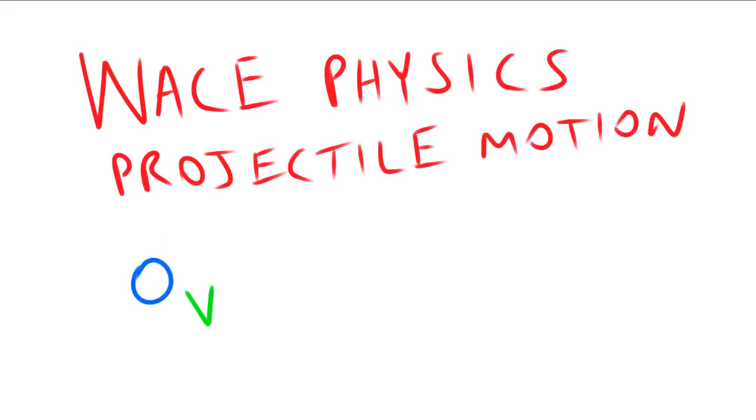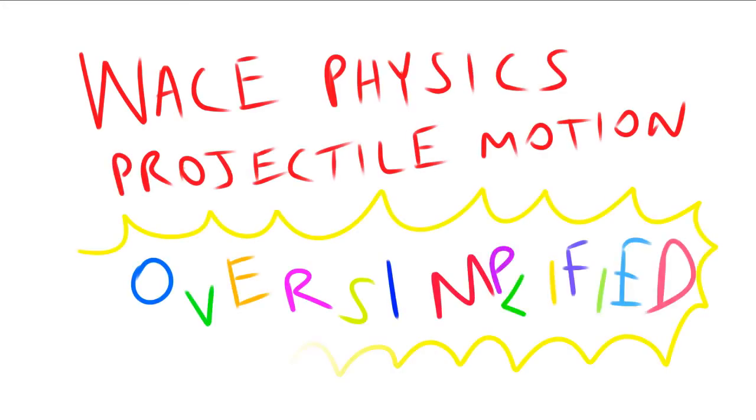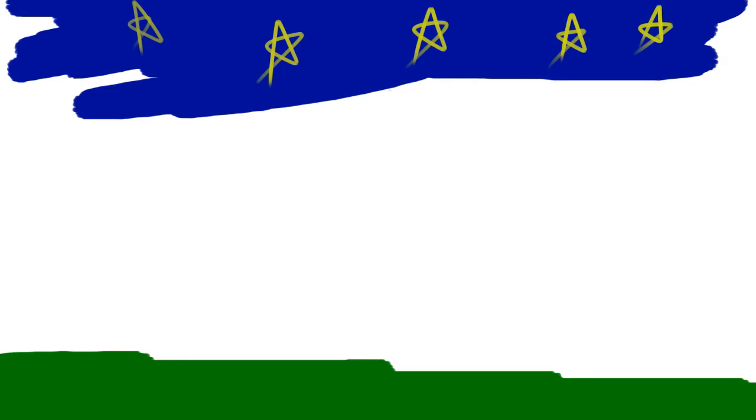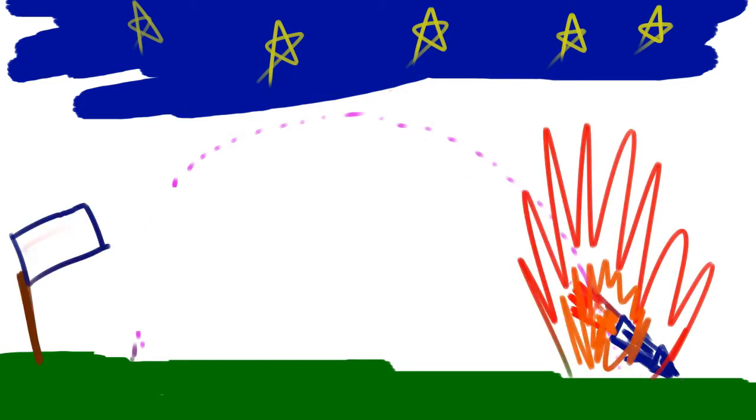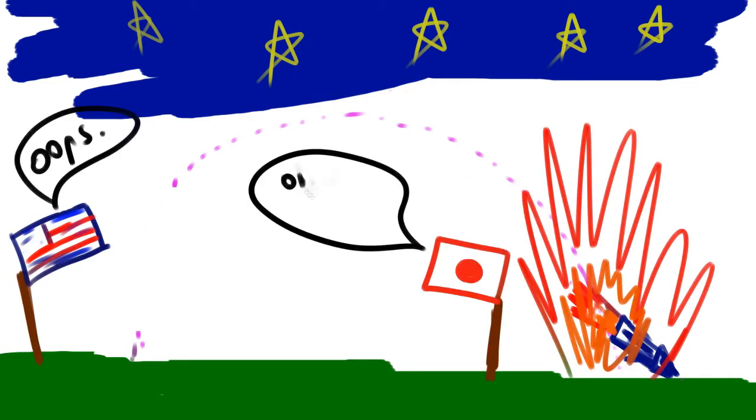WACE physics, projectile motion. Projectile motion deals with the physics aerospace engineers back in the day had to use when rockets were more likely to crash and engineers had to make sure they didn't land somewhere in Japan and trigger something like World War III.